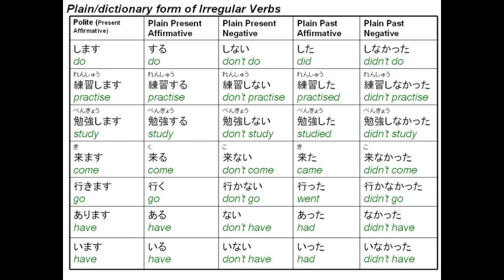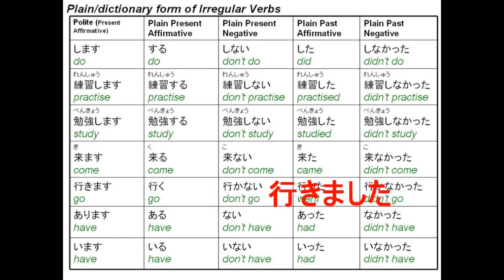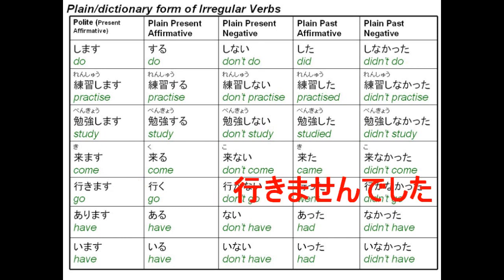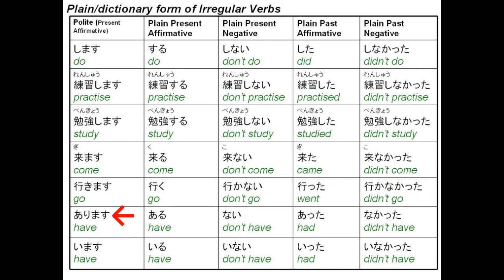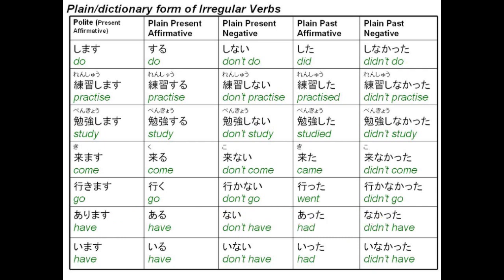With kimasu, this becomes kuru. Kimasen becomes konai. Kimashita is kita. Kimasen deshita is konakatta. Ikimasu becomes iku. Ikimasen becomes ikanai. Ikimashita becomes itta. Ikimasen deshita becomes ikanakatta. Arimasu becomes aru. Arimasen becomes nai. Arimashita becomes atta. Arimasen deshita becomes nakatta. Imasu becomes iru. Imasen becomes inai. Imashita becomes ita. Imasen deshita becomes inakatta.